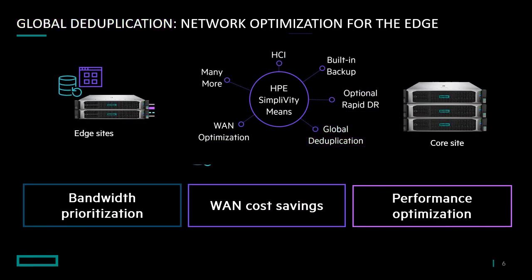Inline global compression and deduplication means data reduction on inception. It won't write whatever is already written, thus achieving performance benefit with data reduction — since the best I/O that we can ever make is the I/O that is never made. It can also do instantaneous VM clones since the same data is never rewritten.